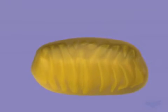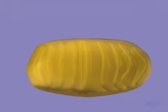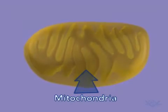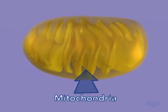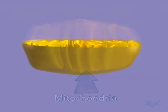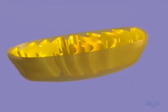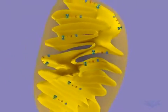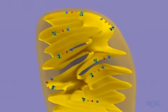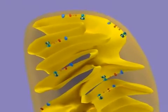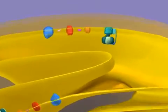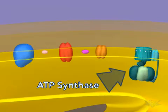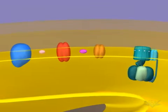Gradients and the potential energy they create are key aspects of the biological world. A good example of the use of a gradient occurs in the mitochondria when ATP is synthesized. ATP is synthesized by ATP synthase, a large complex of membrane-bound protein. Here we see ATP synthase, along with other membrane-bound proteins.